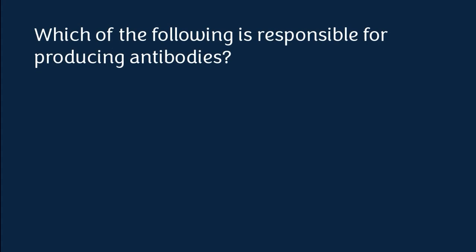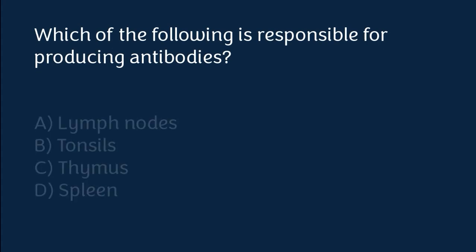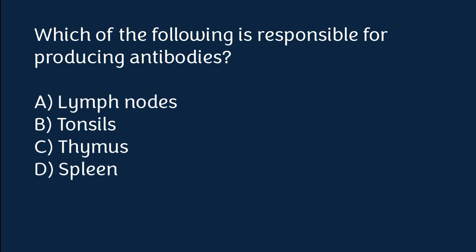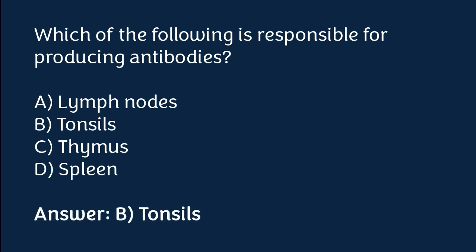Which of the following is responsible for producing antibodies? Lymph nodes, tonsils, thymus, or spleen. The correct answer is option B. Tonsils are responsible for producing antibodies.